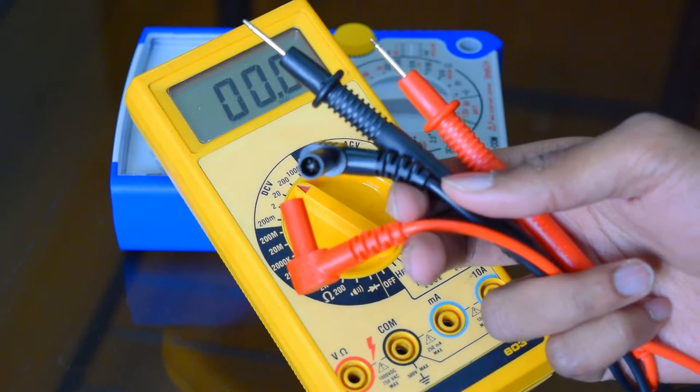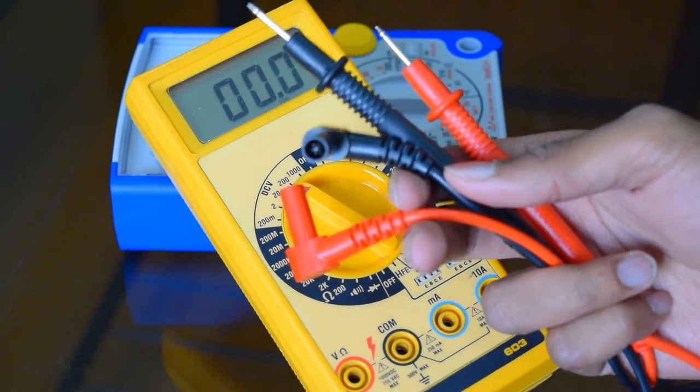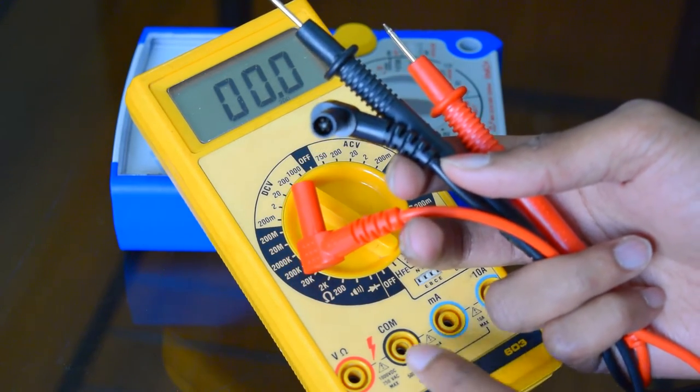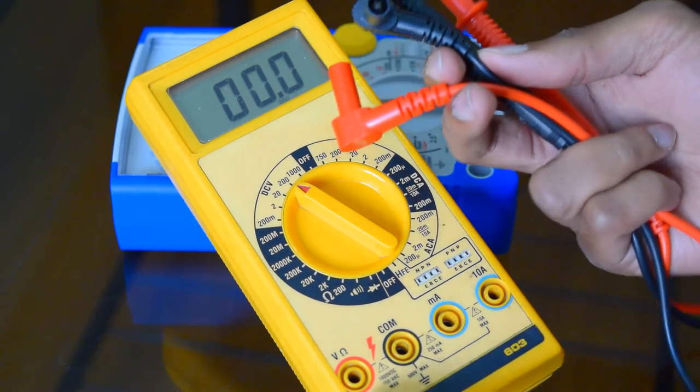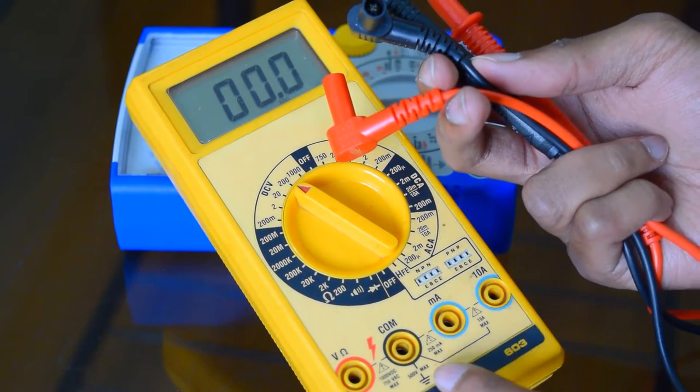Every multimeter comes with a pair of probes which is used for measurement. The black one always goes into the com or the common terminal and the red one goes into the remaining three terminals based on your measurement.